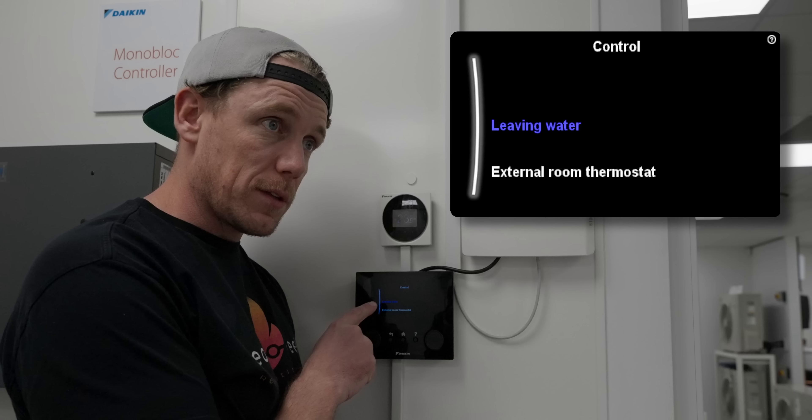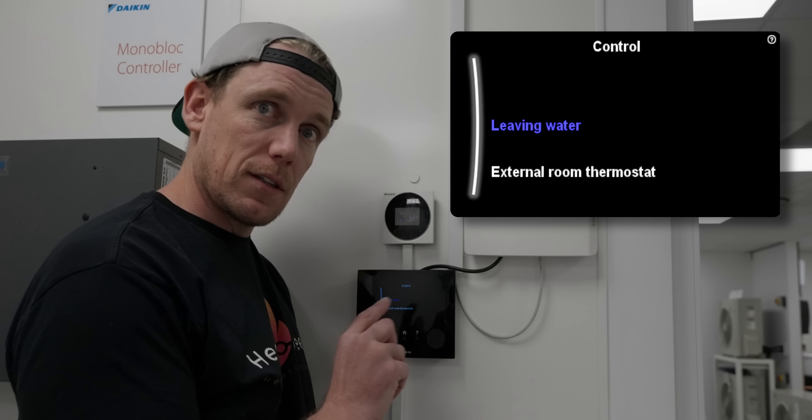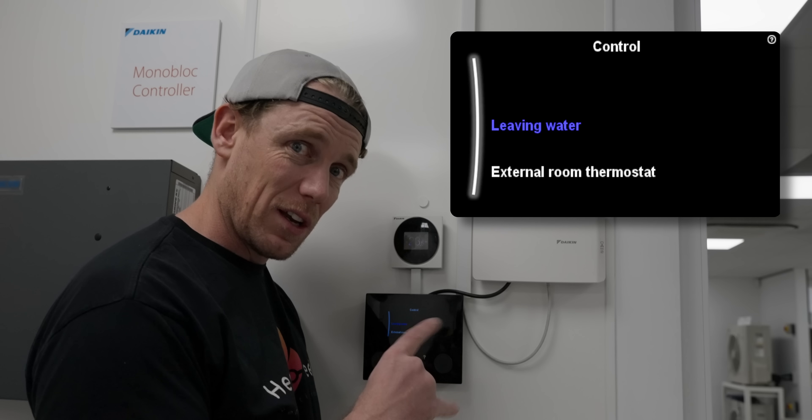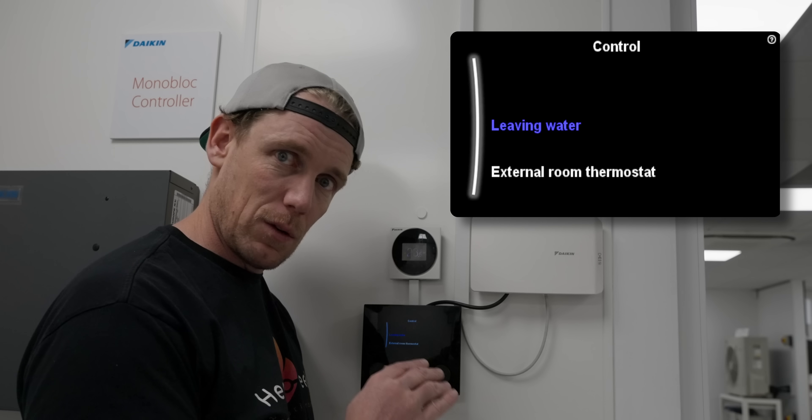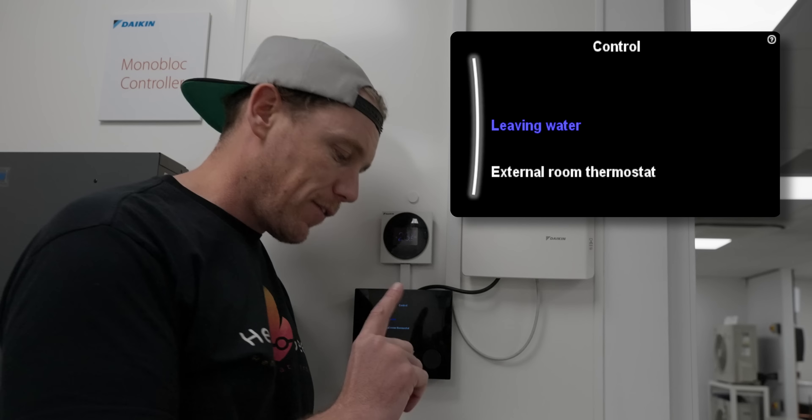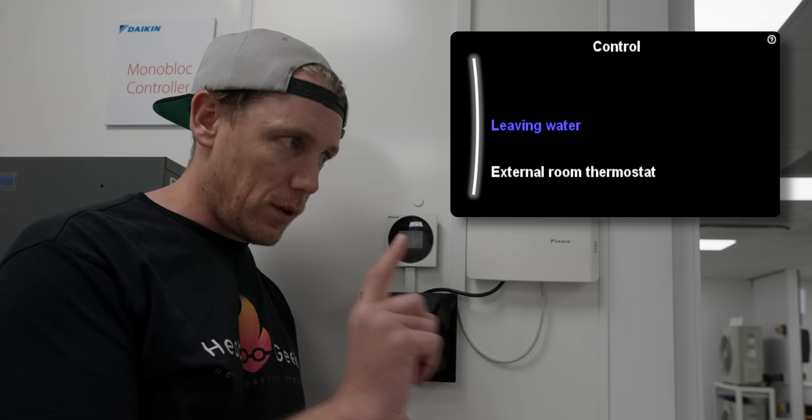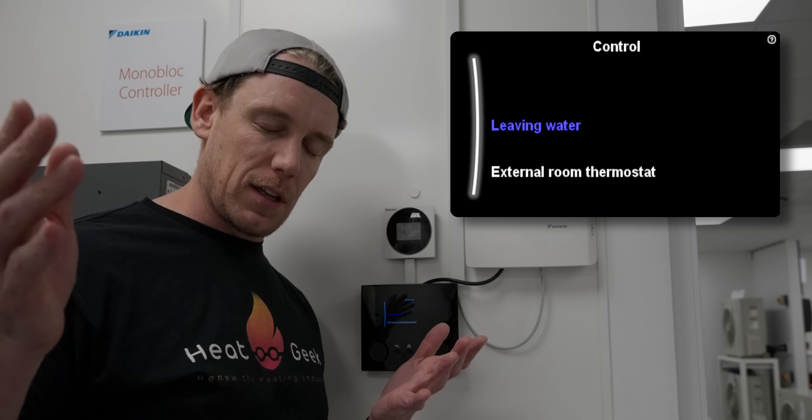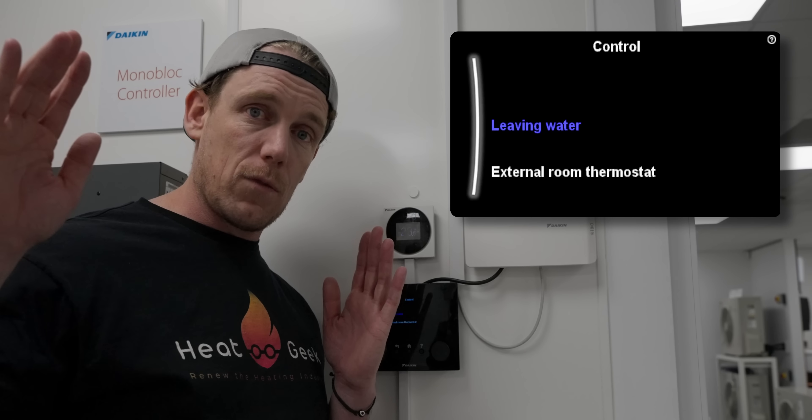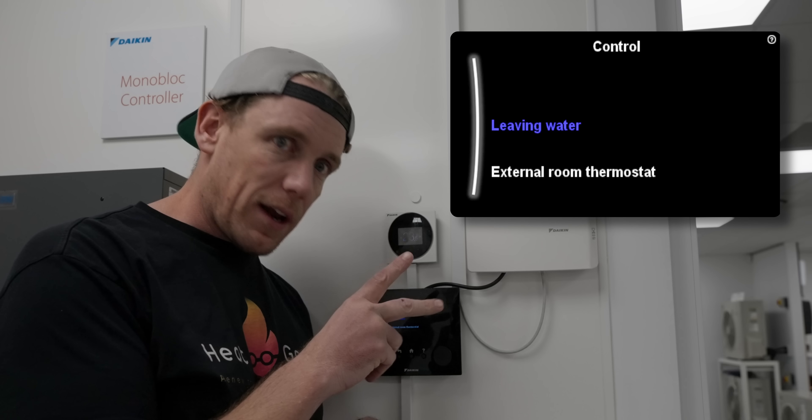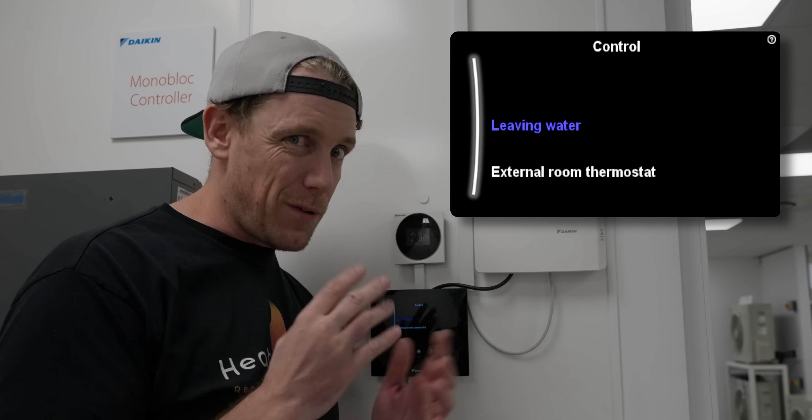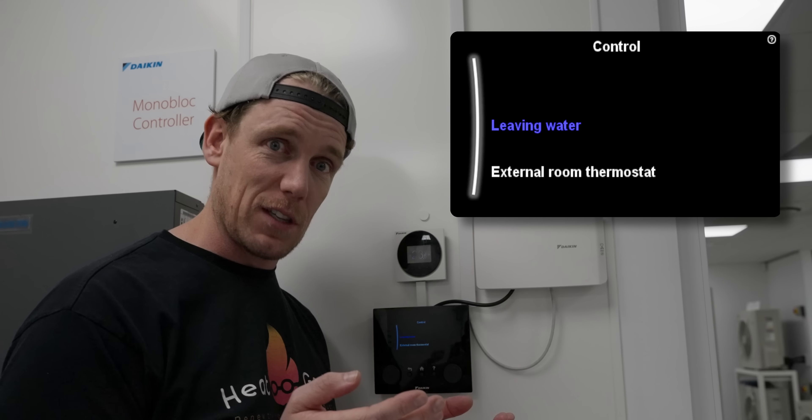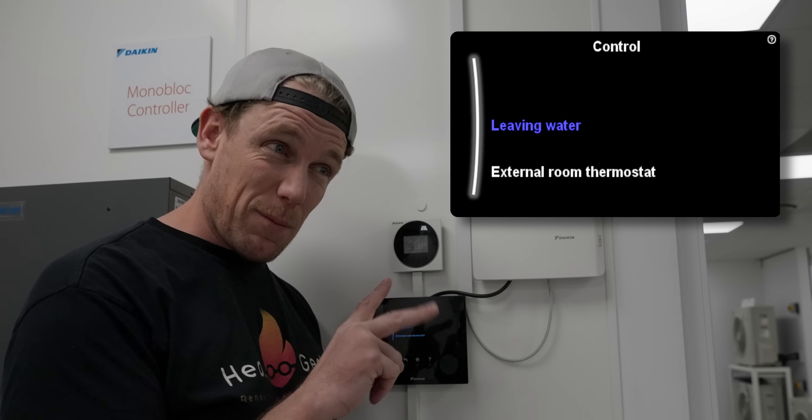Leaving water is fixed temperature flow. This will be pure weather compensation. Daikin do pure weather compensation. You're going to have to play around with that curve and really tune it in quite accurately to get it to work nicely. Having said that, if you've got underfloor heating with thermostat in each room, you can set all your thermostats to say 30, play around with your curve throughout the whole year. This is for more geeky homeowners or installers that are going to spend a lot of time getting maximum efficiency. Most people won't do that.